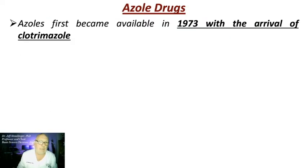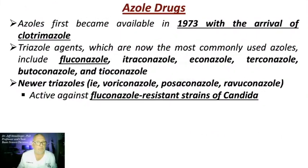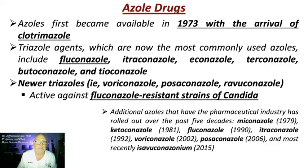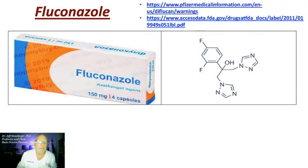Azoles first came on the market in 1973 with the arrival of clotrimazole. Other agents include fluconazole, econazole, butyconazole, and tioconazole. Newer triazoles — voriconazole, posaconazole, ravuconazole — are active against fluconazole-resistant strains of Candida. Resistance is becoming a problem. Additional azoles have been rolled out over the past five decades.